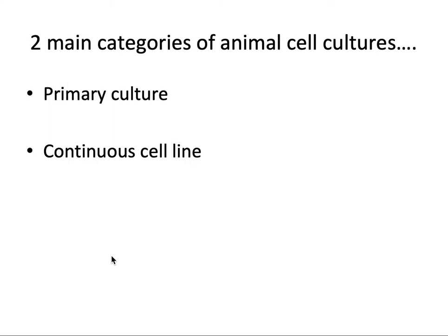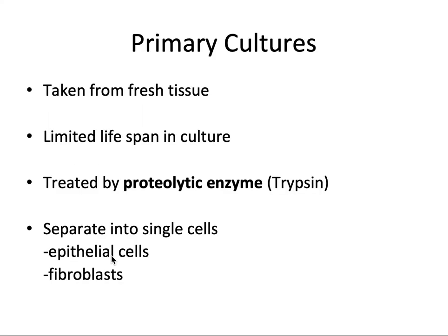There are two main categories of animal cell culture: primary and continuous cell lines. Primary cell lines are taken from fresh tissue and have a limited lifespan — you can only subculture them a limited number of times. They are treated by proteolytic enzymes: a hospital will provide tissue such as liver or skin, and you isolate individual cells from that tissue using proteolytic enzymes, separating it into single cells, and then you culture those primary cells.